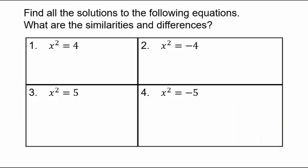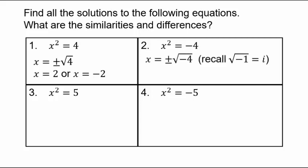You are undoing powers by taking roots. To undo squares, take square roots. The square of both a positive and negative number gives a positive result, so when you take square root you get ±√4, meaning x = 2 or x = -2. For x² = -4, since √(-1) = i, you get x = 2i or x = -2i. The similarity is taking roots; the difference is one gives real solutions and the other gives imaginary solutions.